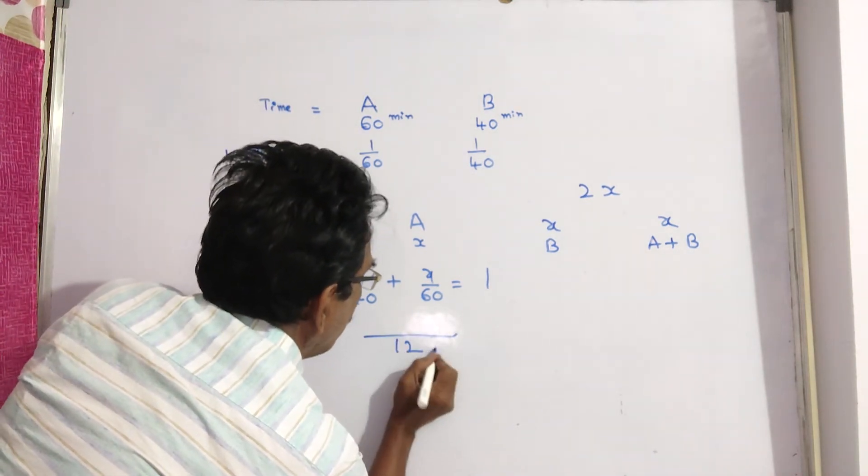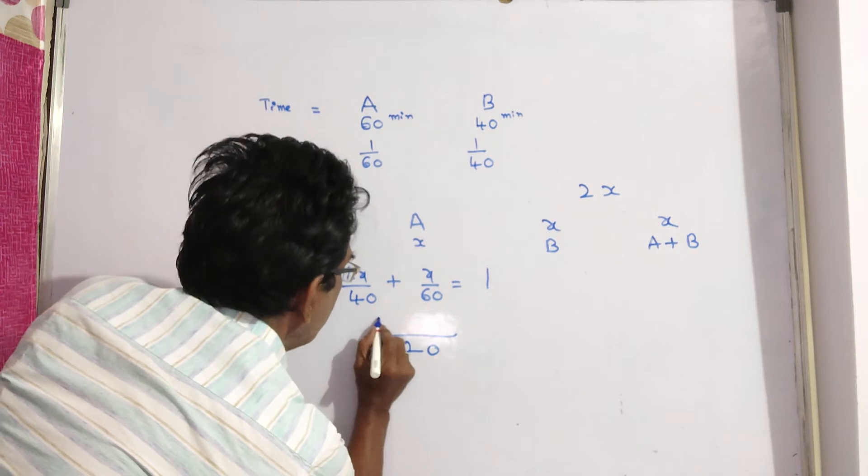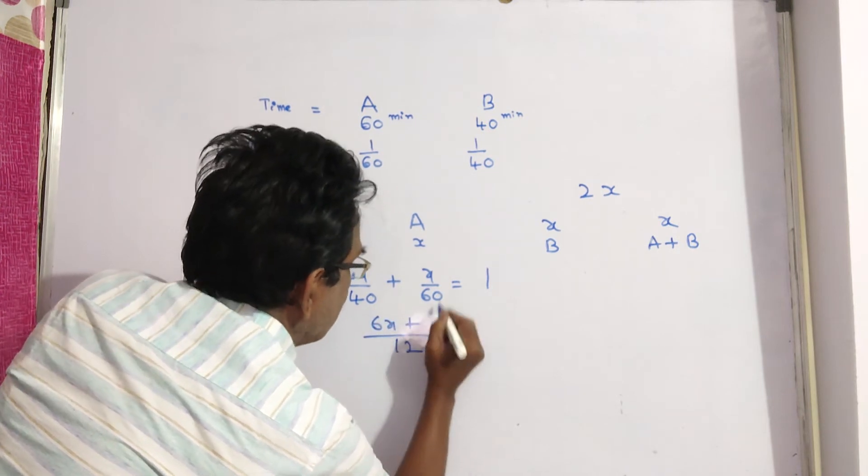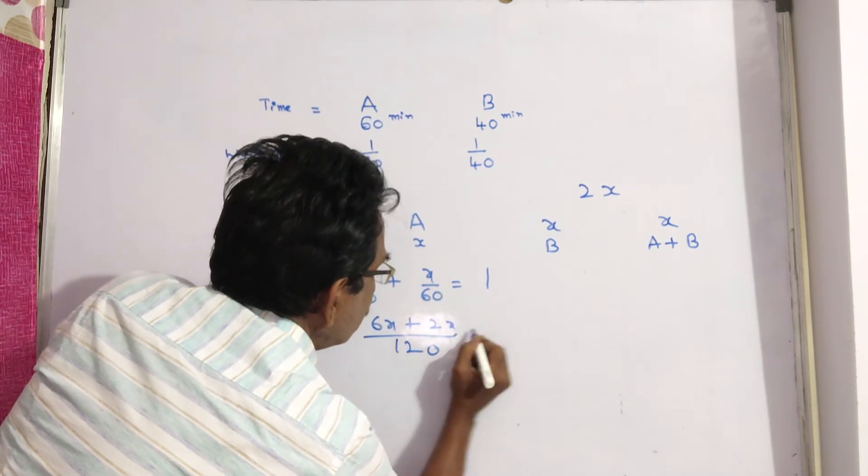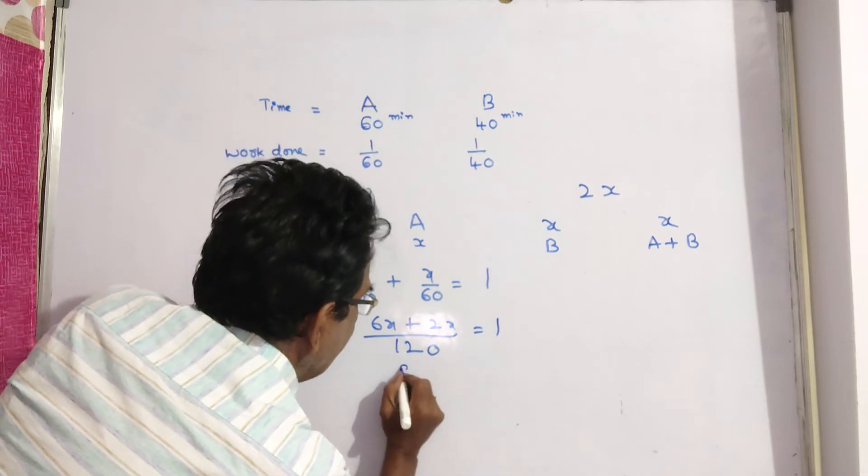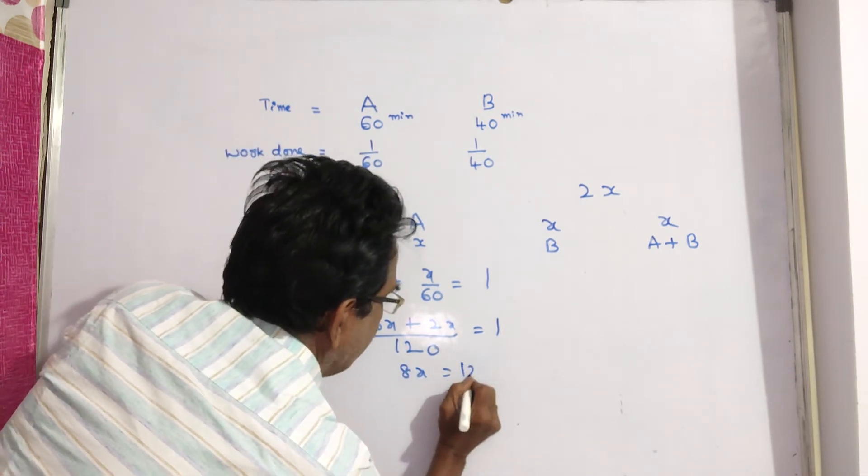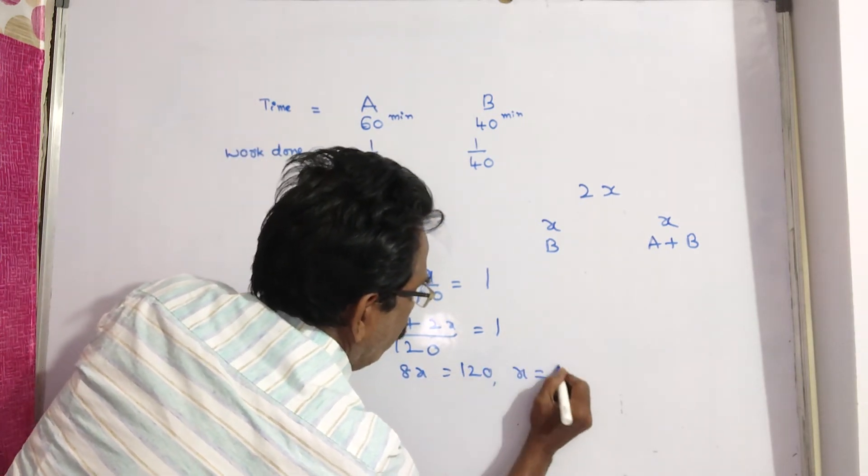Now, the LCM is 120. 6x plus 2x is equal to 120. 8x is equal to 120. x is equal to 15.